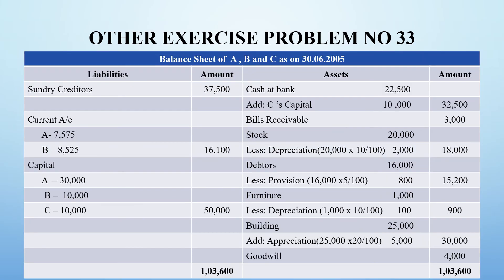The last step is to prepare the balance sheet of A, B and C as on 31/3/2005. On the liability side, sundry creditors is 37,500 rupees. Capital accounts: A is required to invest 30,000, B is 10,000, and C is also 10,000, totalling 50,000 rupees.